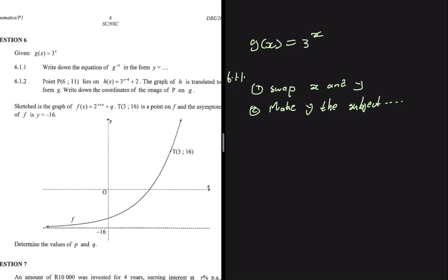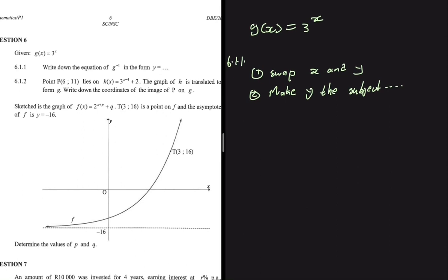For step one, we need to swap x and y. Initially we have y equals 3 to the power x. If we swap x and y, we get x equals 3 to the power of y — you put x in place of y and y in place of x. We are done with step one.